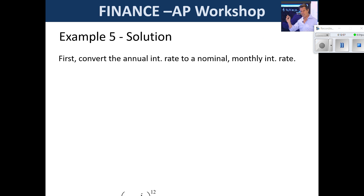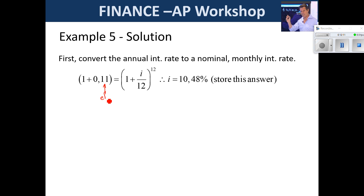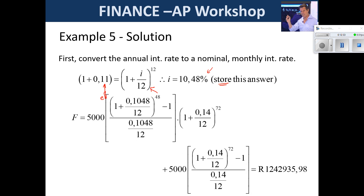First, we had an effective rate and had to convert it to a nominal rate per month. Make sure you store the full rate on your calculator — I showed it to two decimal places but kept the full value. This is not a final answer so you cannot round off early. Then we do this annuity for four years, but there are still six more years where it must compound to the finish line — that's why we see that bracket. The R5,000 annuity for the next six years compounds to the finish line, and we add these two parts together.